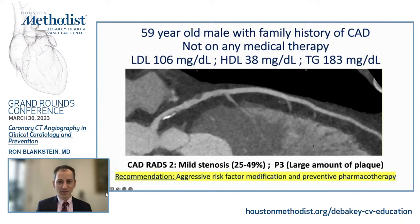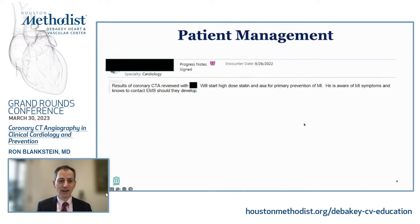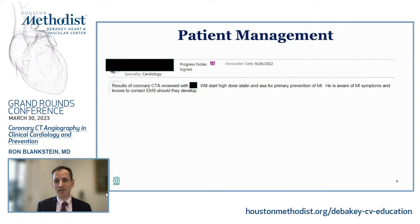I'm always interested in whether the tests we do actually impact patient care. A couple weeks later, the chart note read: results of coronary CTA reviewed — patient will start high-dose statin and aspirin for primary prevention. I show this example because it emphasizes the importance of communicating results and the hope that clinicians and patients actually act on imaging test results.